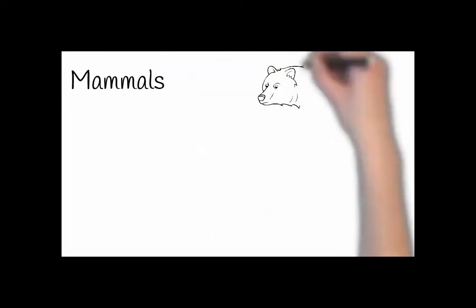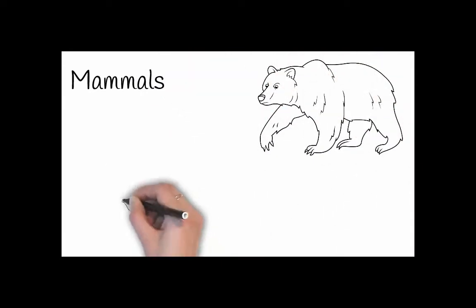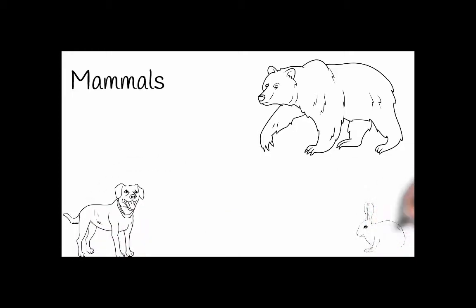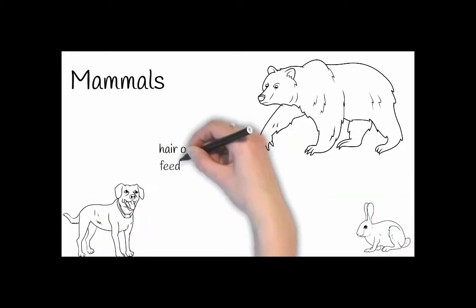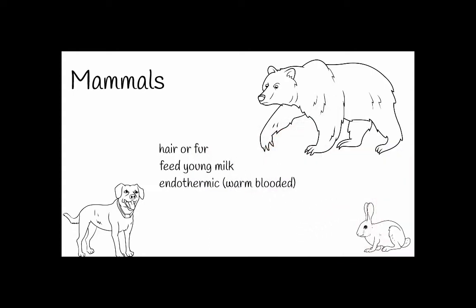Mammals are classified by having hair or fur, by feeding their young milk, and being warm-blooded. The word that we use for warm-blooded is endothermic.